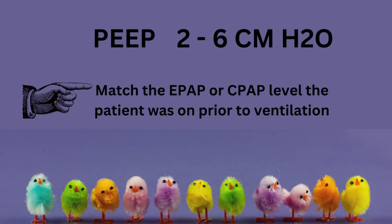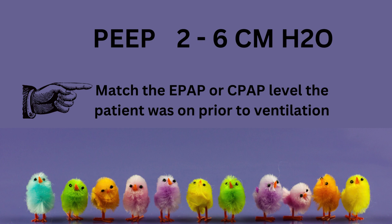For PEEP, we recommend setting it between 2 to 6 cmH2O for initial settings. However, if the patient was on BiPAP or CPAP prior to going on the ventilator, match the EPAP or CPAP level for their PEEP. Higher PEEPs will be used later — particularly for ARDS patients — but two to six is a great starting point for initial settings.